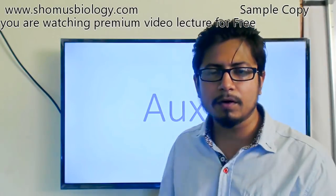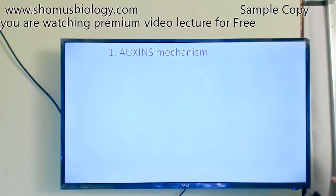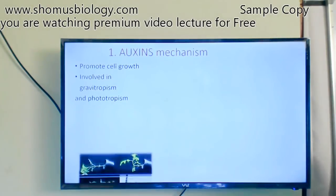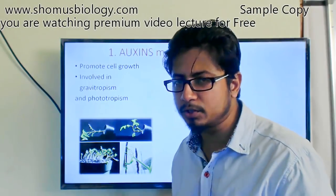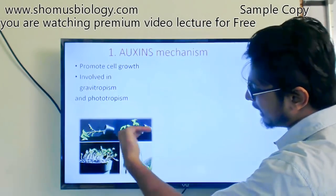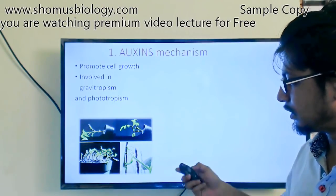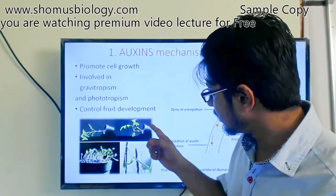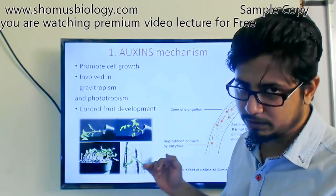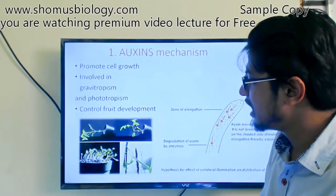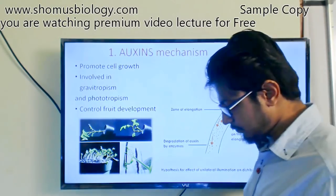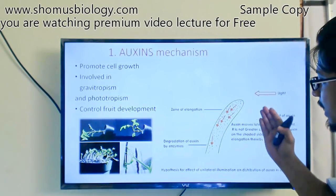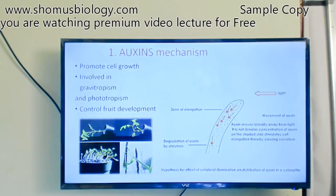Auxin and cytokinin are both involved in plant growth. Auxin is always involved in promoting cell elongation and growth of the plant. It is also involved in gravitropism and phototropism. Phototropism is the tendency of plant tissue to grow towards light — that's why you see a bend forming in the plant's stem as it always wants to go toward sunlight. Gravitropism is where the stem of the plant will always grow against gravity while the root will always grow toward gravity. The question is: how can the plant establish such bending?